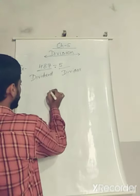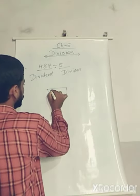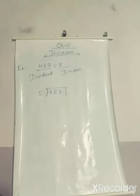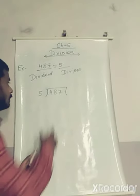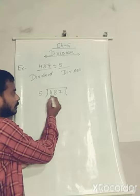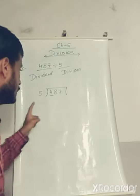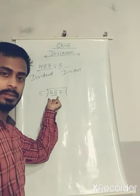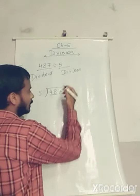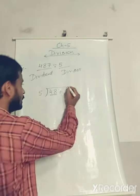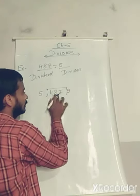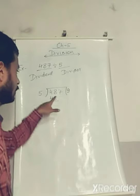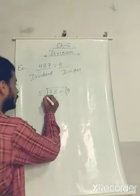Now, see: 487 divided by 5. There is one digit in the Divisor, so first of all we will take the first digit, which is 4. But 4 is less than 5, so in this case we take 2 digits — it becomes 48. Now, 5 tens are 50, but 48 is less than 50, that is why we take 5 nines are 45.